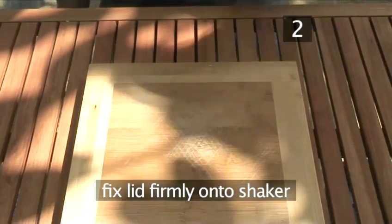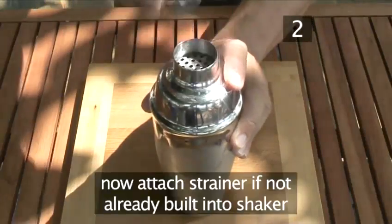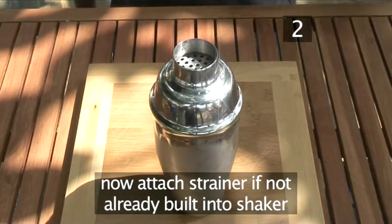Fix the lid firmly onto the shaker, then holding both ends, shake at an angle for about 20 seconds. Put the shaker down. Remove the lid and attach the strainer to the top ready to serve the cocktail.